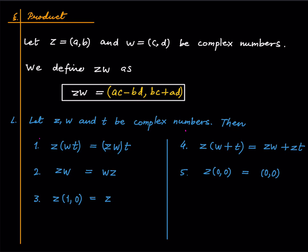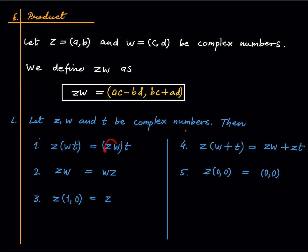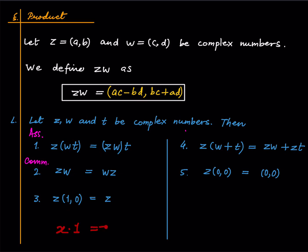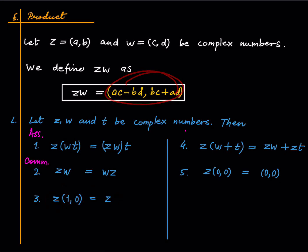So just accept this definition for now — it will be more clear as to what is going on later. Let Z, W, and T be complex numbers. We have associativity of product: either multiply the last two things first or the first two things first, it is the same thing. We have commutativity of product: ZW equals WZ. And the complex number 1 comma 0 behaves like the multiplicative identity, just like 1 in real numbers — Z times (1 comma 0) equals Z for all Z, and you can verify this easily via the formula.